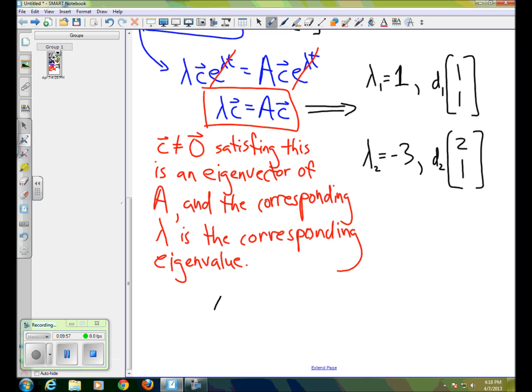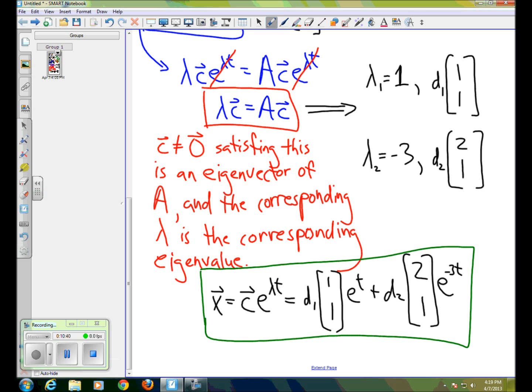So in this case, our x vector, our guess, remember our guess was x equals c e to the lambda t. But we've got two lambdas and two vectors. So our final solution is d1 times 1, 1, e to the t, plus d2 times 2, 1 times e to the minus 3t. And that is our solution to the original system of equations.